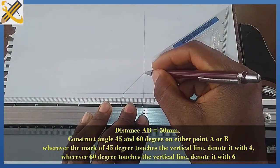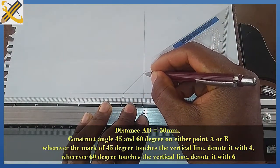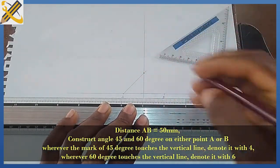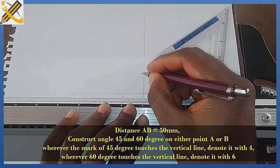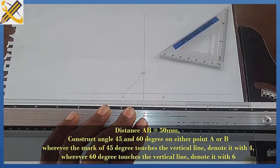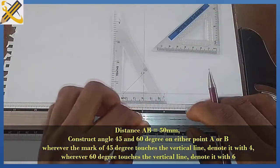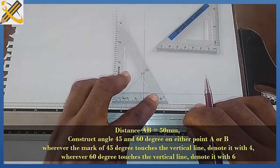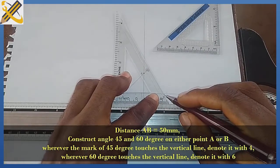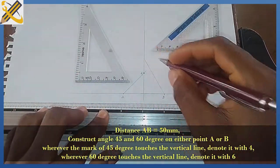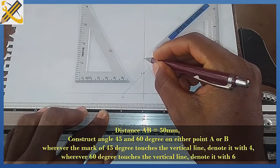Wherever the mark of angle 45 on point A touches this vertical line, I will denote it with point 4. I'm going to construct angle 60 degrees on point B. Wherever the line of 60 degrees touches this vertical line, I will denote it with point 6.